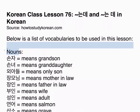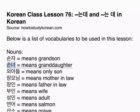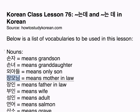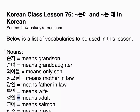Nouns: 손자 means grandson. 손녀 means granddaughter. 외아들 means only son. 장모님 means mother-in-law. 장인 means father-in-law. 부인 means wife. 성인 means adult.